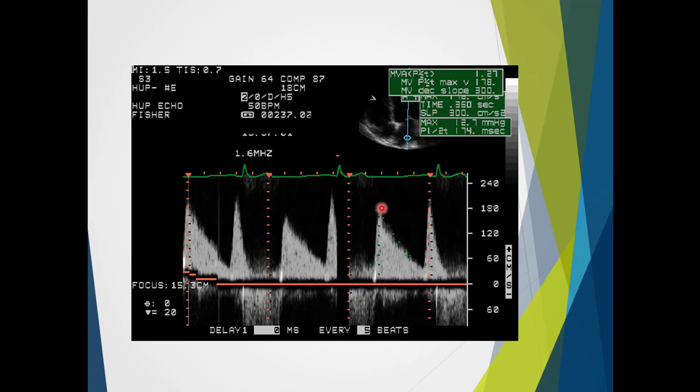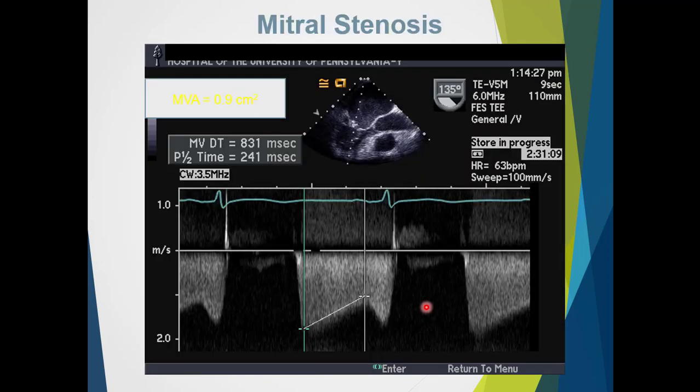So we could measure our deceleration slope here, and if we had a ski slope where it came to a peak and then curved down, we would take the middle portion and measure that as our slope. And we could see from this one, we measure our deceleration slope appropriately there.